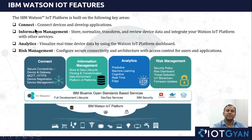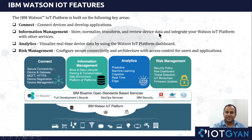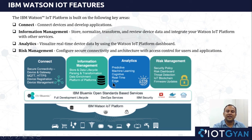Let's list out the main features of IBM Watson platform. First is Connect, which includes secure connectivity of devices and gateways using MQTT or HTTP protocol. Next is Information Management, which stores, normalizes, transforms, and reviews device data, so it can be viewed in a web UI, application, or made available to other apps. Third is Analytics, which includes predictive analysis, machine learning, cognitive processing, real-time analytics, and edge analytics.